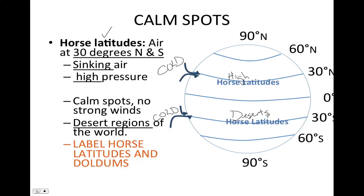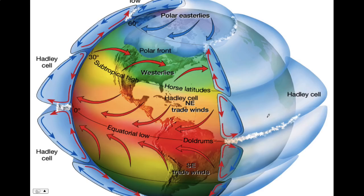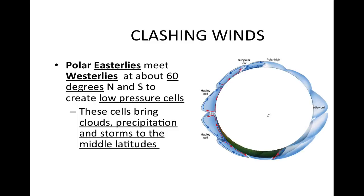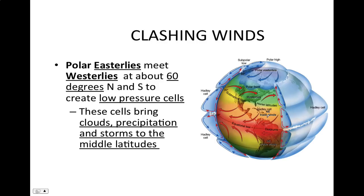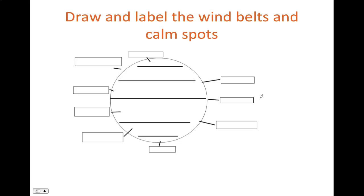Label the horse latitudes and the doldrums on your diagram to get the full picture. You should have a solid understanding of what's going on at the surface, in the upper atmosphere, where it's windy, and where it's calm. When these large air masses meet, sometimes low pressure systems are created, which can bring lots of clouds and precipitation to the mid-latitudes — especially here in Minnesota. When the polar easterlies and the prevailing westerlies meet, that's when we get a lot of our really severe, bad weather. Make sure you complete your notes by drawing and labeling the wind belts and calm spots — the more you practice this, the better prepared you'll be for future tests.